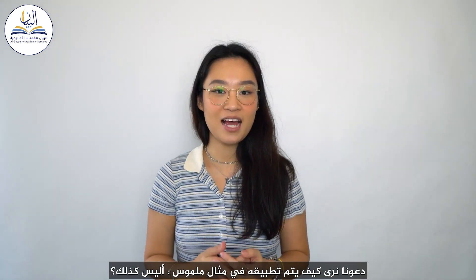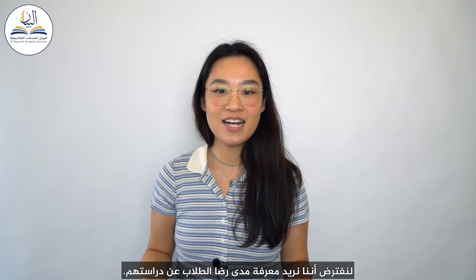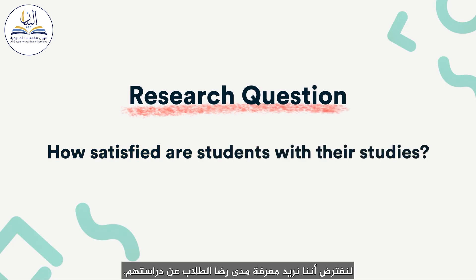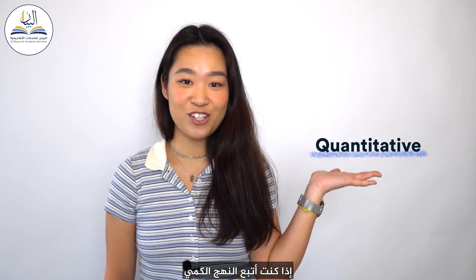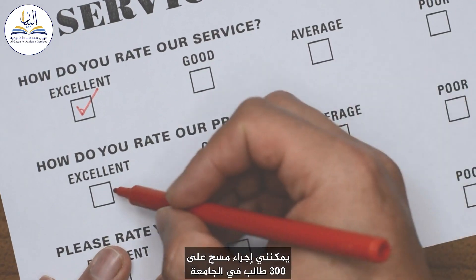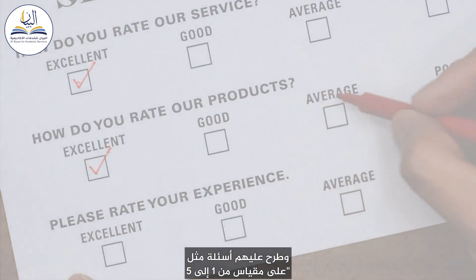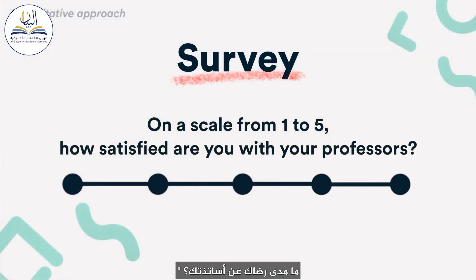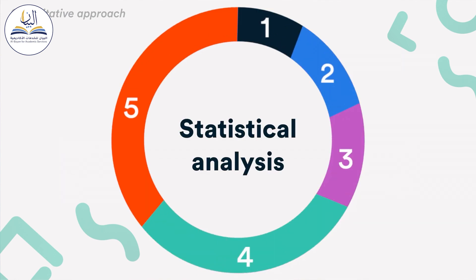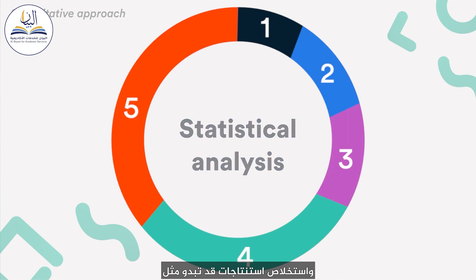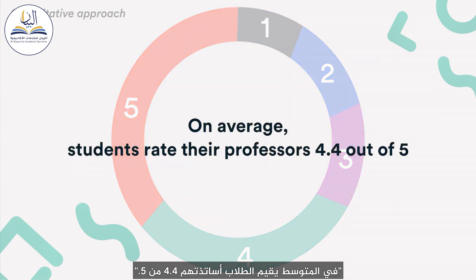Let's see how it applies in a concrete example. Say we want to find out how satisfied students are in their studies. If I'm taking the quantitative approach, I can survey 300 students at the university and ask them questions like, on a scale from 1 to 5, how satisfied are you with your professors? With the collected data, I will run a statistical analysis and draw conclusions that might sound something like: on average, students rate their professors 4.4 out of 5.